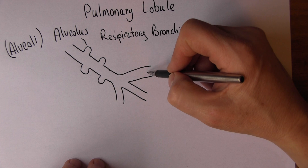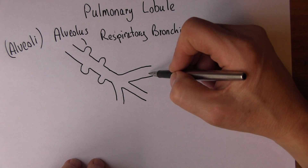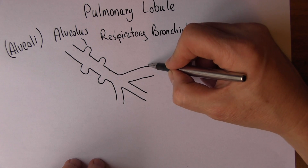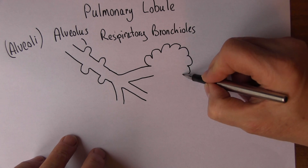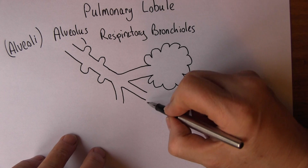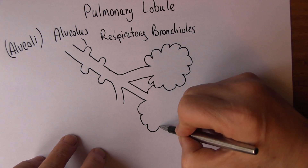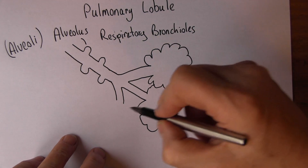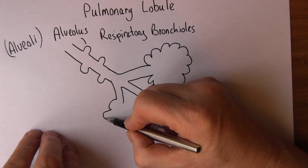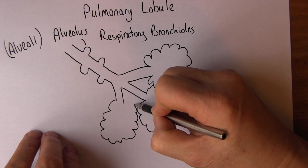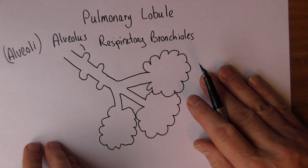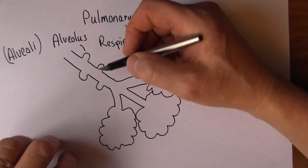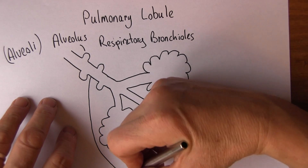These very small ducts are called the alveolar ducts, and these go towards the classical clusters of alveoli — the air sacs, the so-called alveolar sacs — which greatly increase the surface area. About 70 square metres per lung of surface area. These units are called the pulmonary lobules, the microscopic lobules, because they're enclosed in an elastic tissue sac.